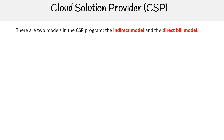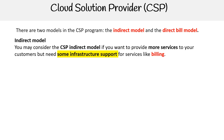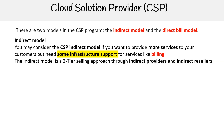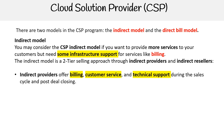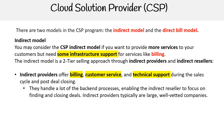There are two models in the CSP program: the indirect model and the direct bill model. For the indirect model, you may consider this if you want to provide more services to your customers but need some infrastructure support for services like billing. It is a two-tier selling approach through indirect providers and indirect resellers. Indirect providers offer billing, customer service, and technical support during the sales cycle and post deal closing.